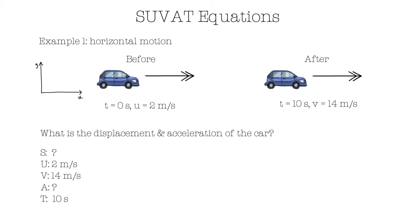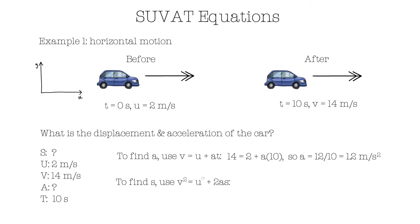So we have three known variables. The equation V equals U plus AT contains all the variables required to calculate the acceleration. Substituting the values, we get 14 equals 2 plus A multiplied by 10, which gives us 12 over 10, or 1.2 meters per second squared. Now to find displacement, we can use V squared equals U squared plus 2AS. Substituting the values: 14 squared equals 2 squared plus 2 times 1.2 times S. Simplify and rearrange to get 196 minus 4 divided by 2.4, which results in 80 meters.